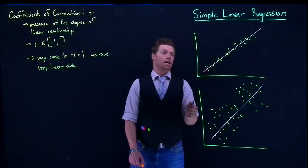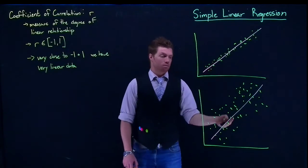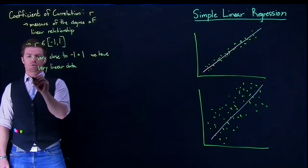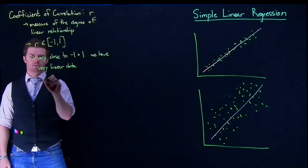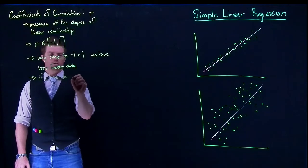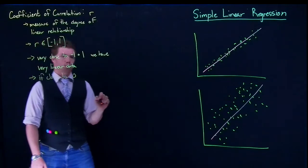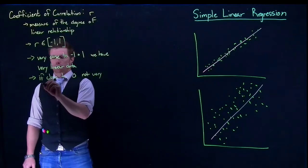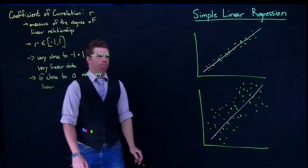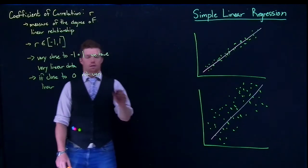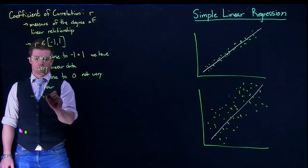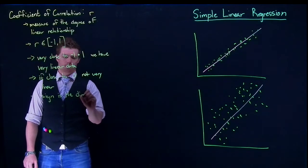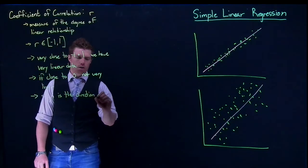So if we were just comparing r values, this guy would have a higher r value than this value down here. If it's close to zero, if we're close to zero, it means we're not very linear. And the sign is the direction of relationship.